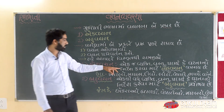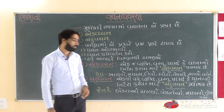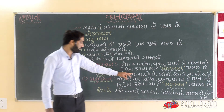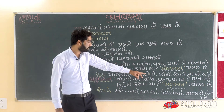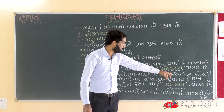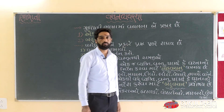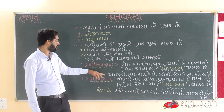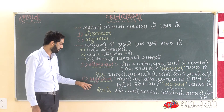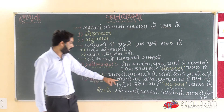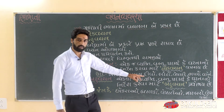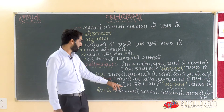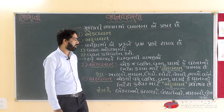એક વ્યક્તિ, વસ્તુ, પ્રાણી કે ઘટનાનો નિર્દેશ કરવા માટે એક વચન વપરાય છે — તેનું ઉદાહરણ આગળ જોઈશું. નંબર 2 — બહુ વચન: એક કરતાં વધુ વ્યક્તિ, વસ્તુ, પ્રાણી કે ઘટનાનો નિર્દેશ કરવા માટે બહુ વચન વપરાય છે.